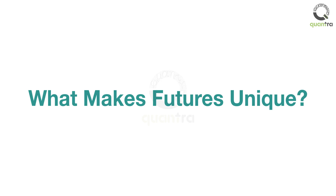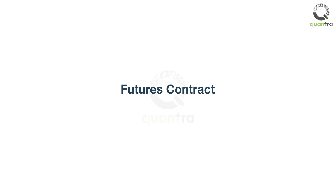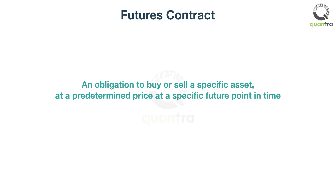Welcome to this video on what makes futures unique. The theoretical definition of a futures contract is that it is an obligation to buy or sell a specific asset at a predetermined price at a specific future point in time. While this may sound highly theoretical and may not matter all that much on a daily basis for a futures trader, you still need to understand what this means and why the futures markets came to be.